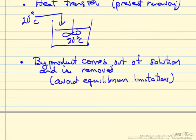Another use of a semi-batch reactor would be where a byproduct comes out of the solution, is removed, and, for example, helps shift equilibrium if you can remove that from the system.